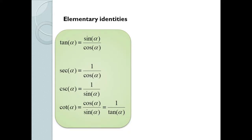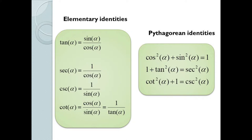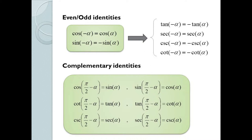The primary identities we discussed previously that you should remember include our elementary identities, which reduce all the trig functions back to sine and cosine, our Pythagorean identities, which show the basic circular relationship between sine and cosine, our even-odd identities, which describe symmetry, and our complementary identities, which show how trig functions are related to their co-functions.